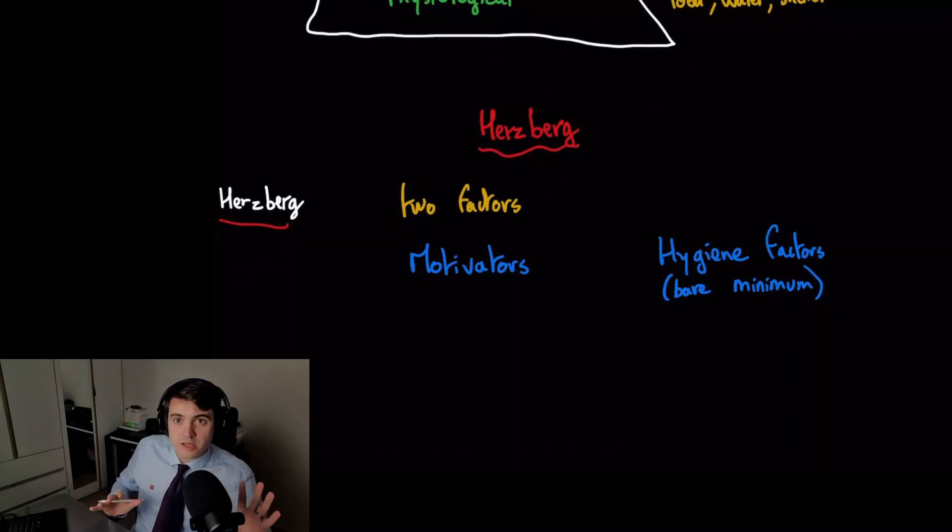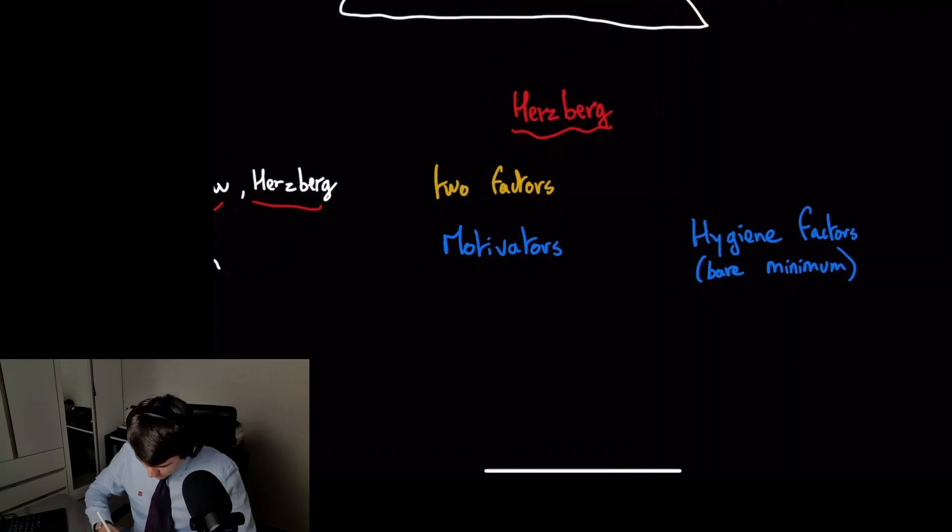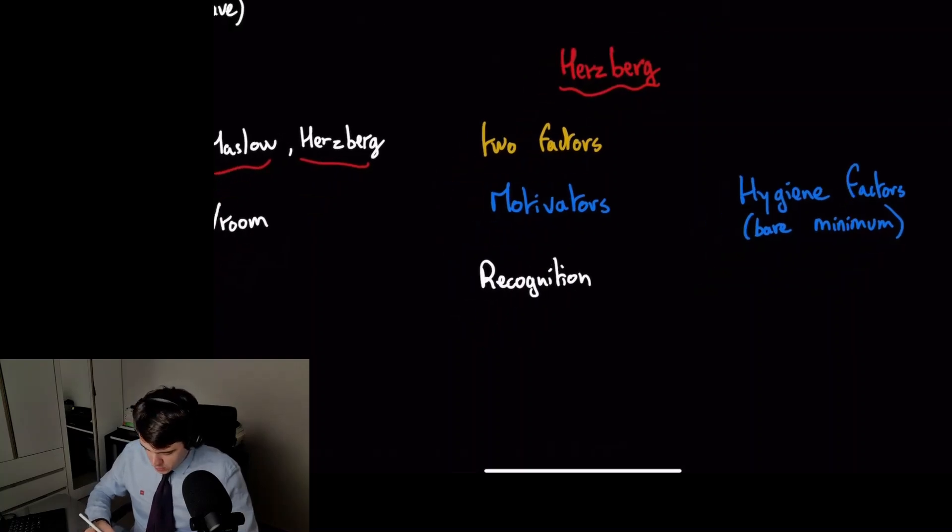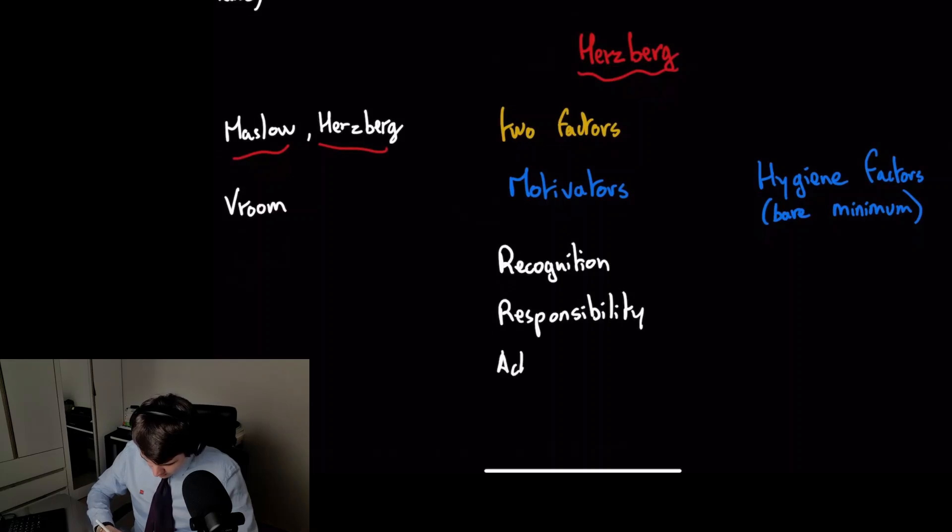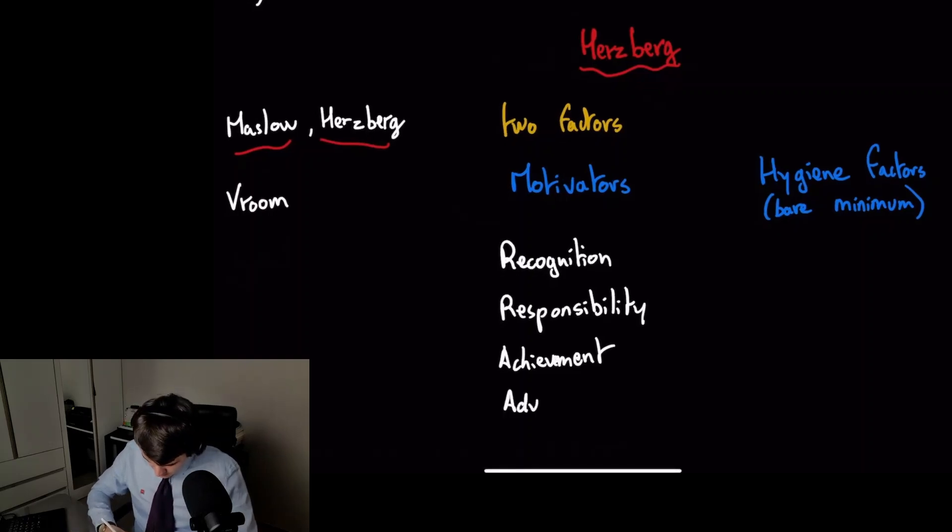What does he say motivates people? Recognition - obviously we're talking about at work here. Giving more responsibility to somebody will motivate them. The feeling of achieving something - achievement. And advancement, the feeling of progressing, of going somewhere. So these four are actually motivating.